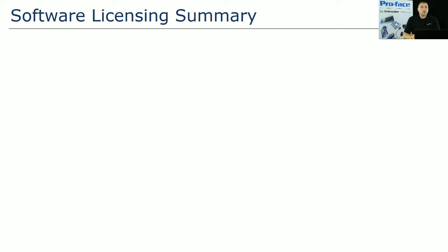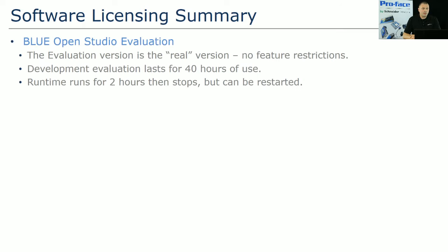Blue Open Studio has an evaluation period of 40 hours of running time. If you install the software, use it for five hours, and then come back two weeks later, you still have 35 hours left. The evaluation version is the real version — there are no feature limitations, no restrictions. It's simply 40 hours of running time, that's the only limit.